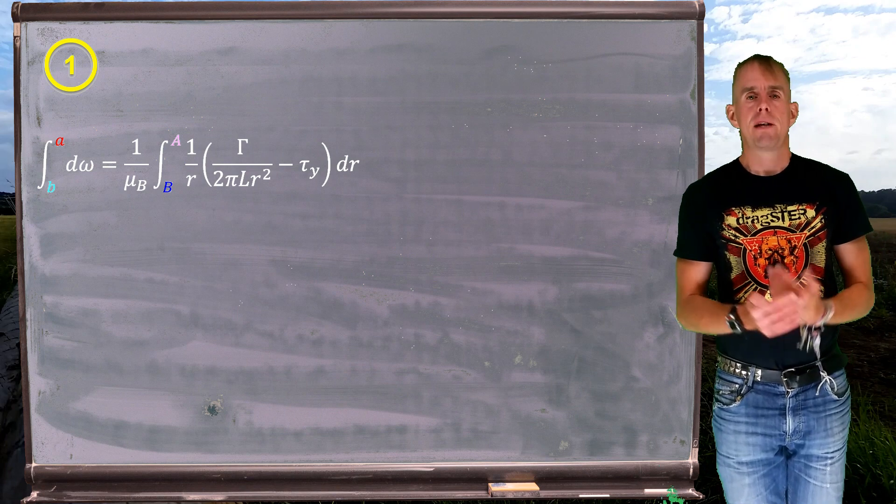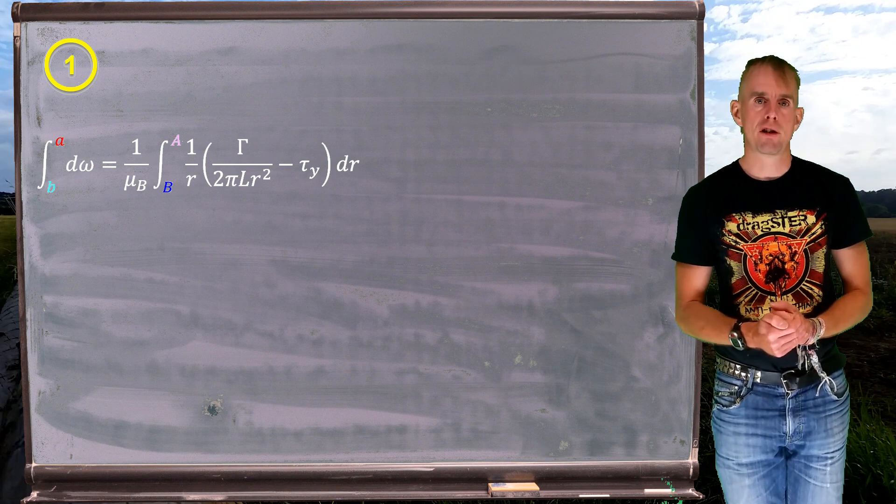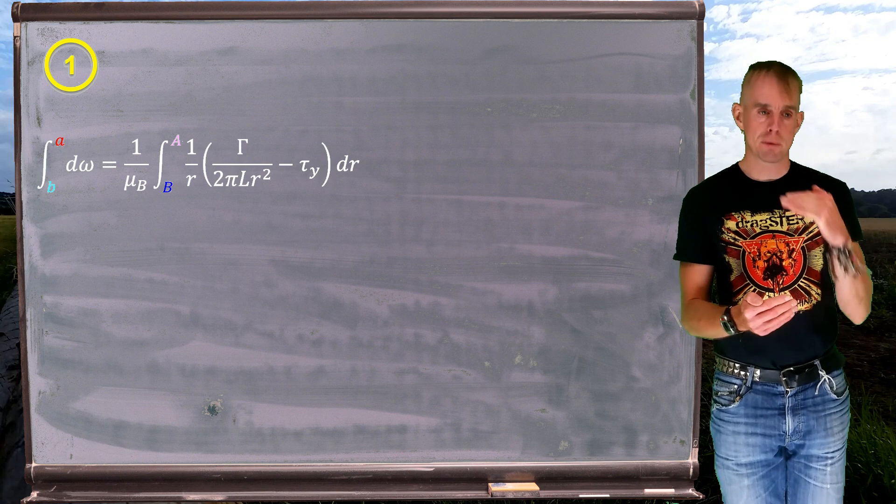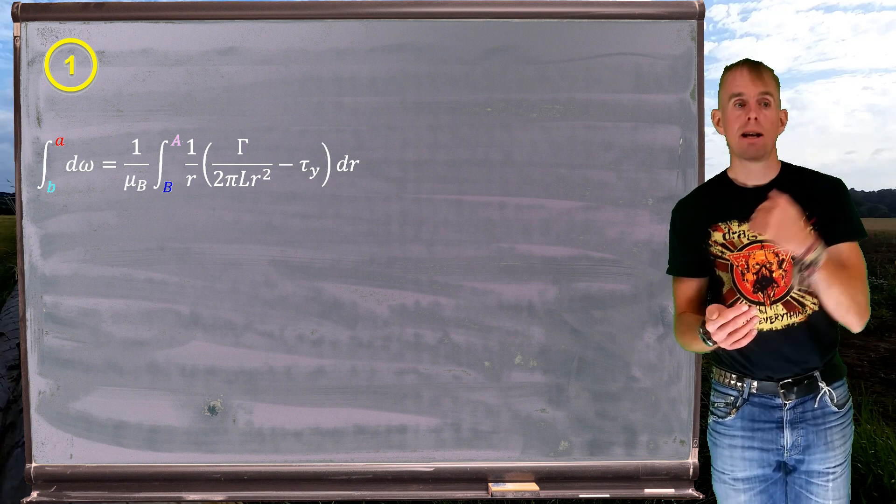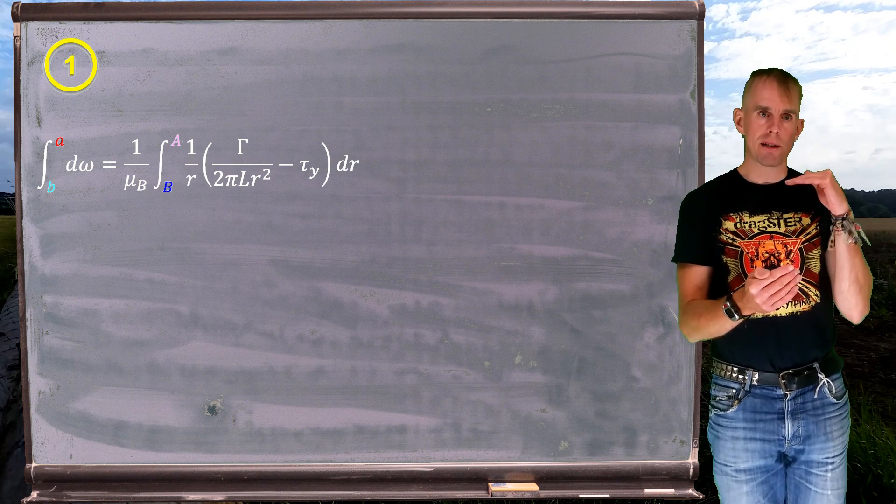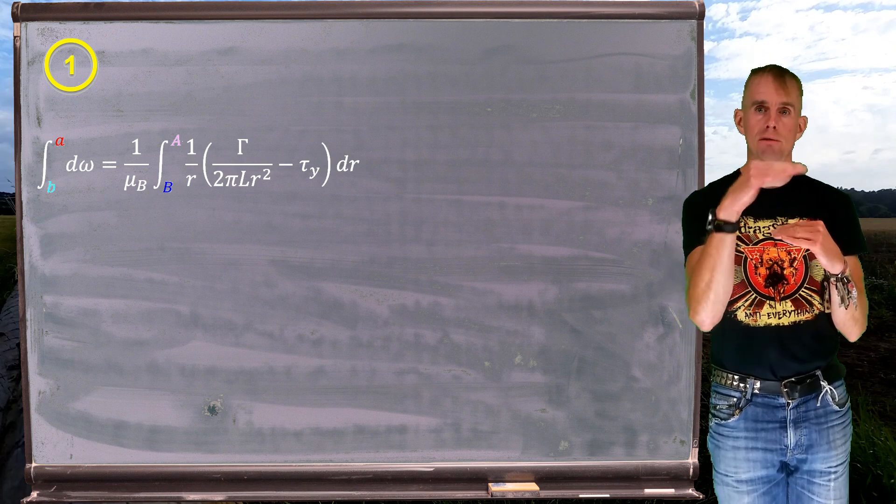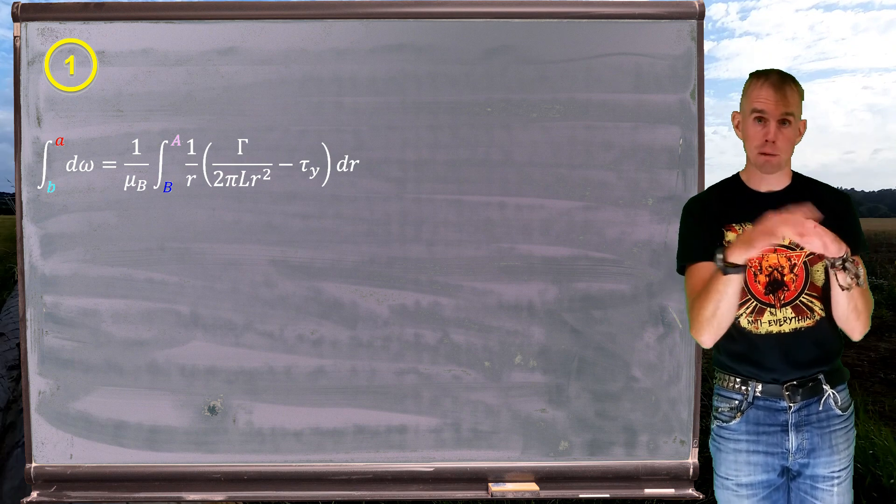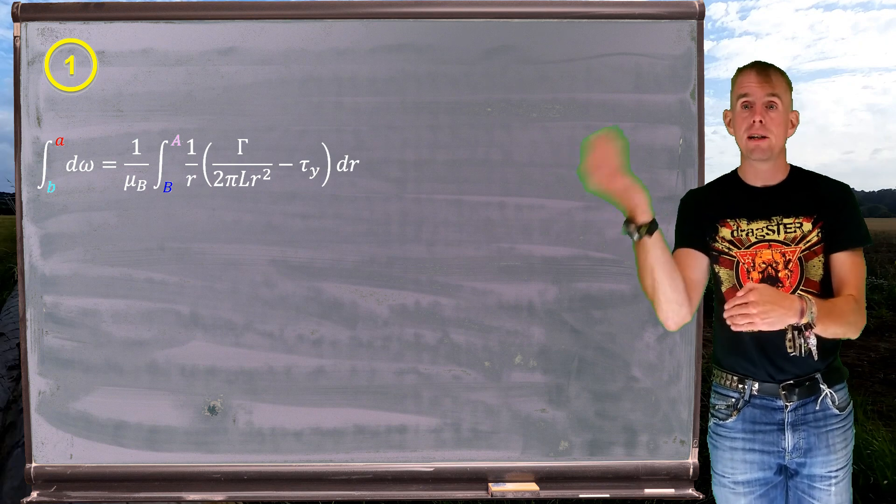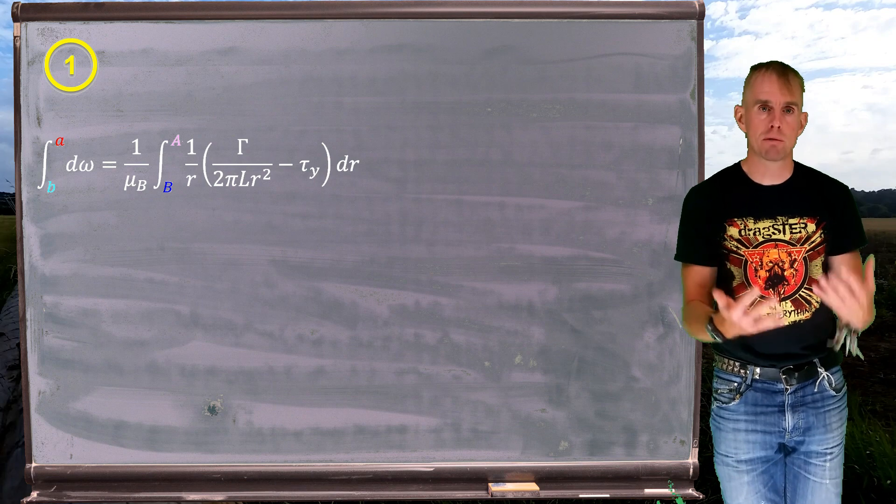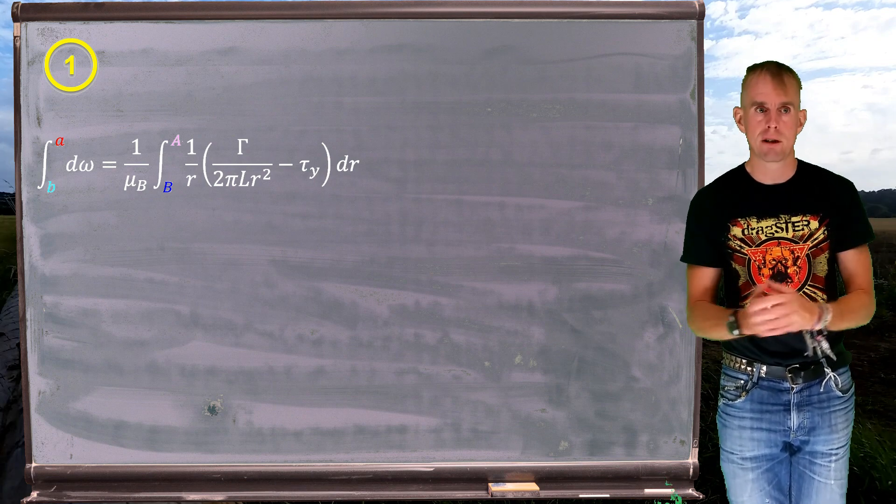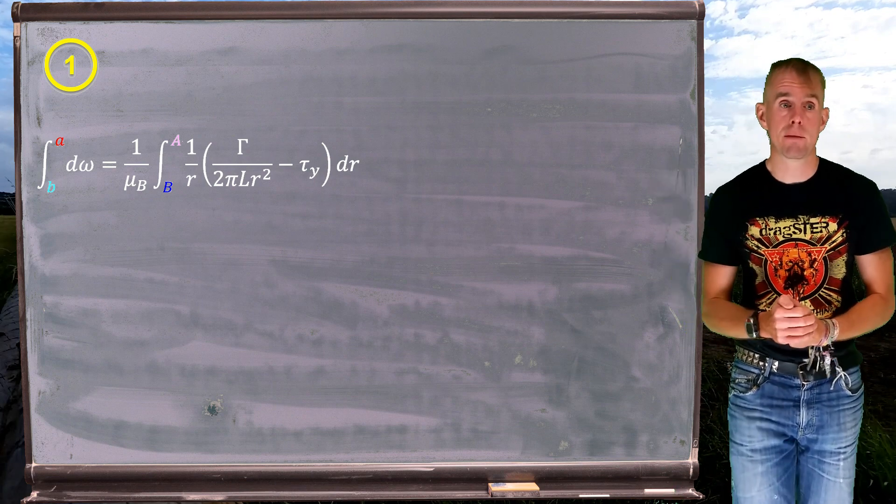Now, if you remember the workflow for previous lectures for the Couette, we integrated between the inner cylinder and the outer cylinder, got an intermediate result, then integrated again between the inner cylinder and an arbitrary point in the flow, because we want to work out a profile, used that intermediate result to simplify the solution, and hey presto, we had an expression for v theta as a function of r. We're going to do exactly the same here.